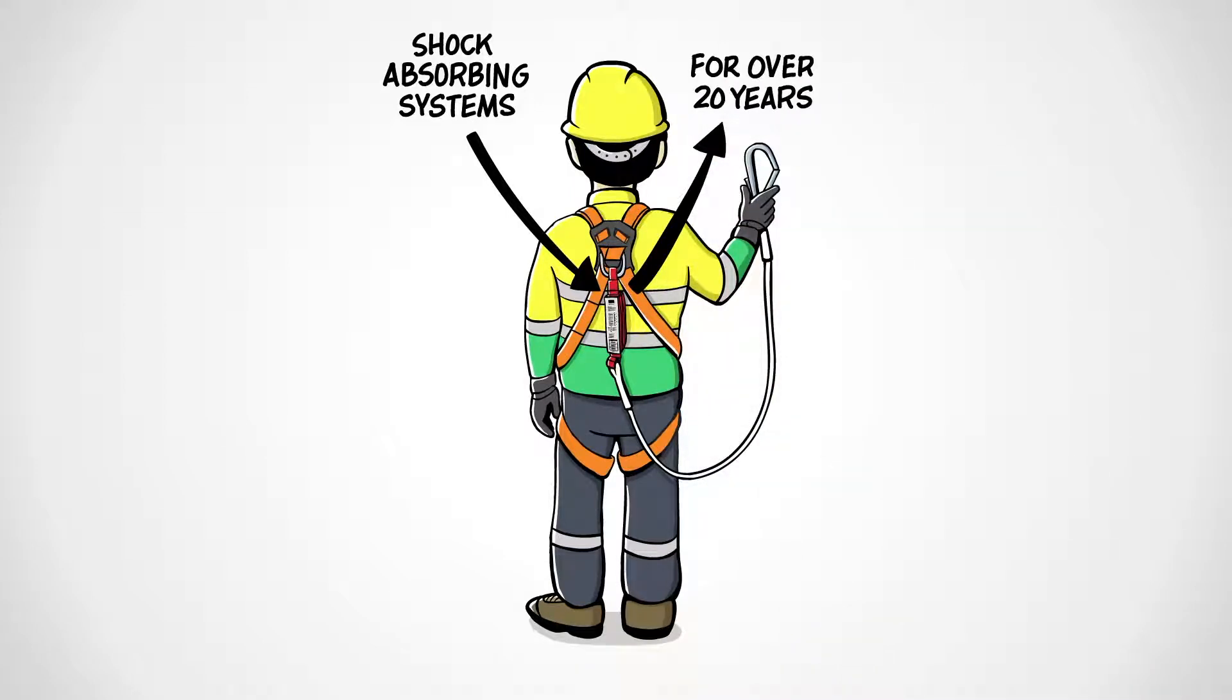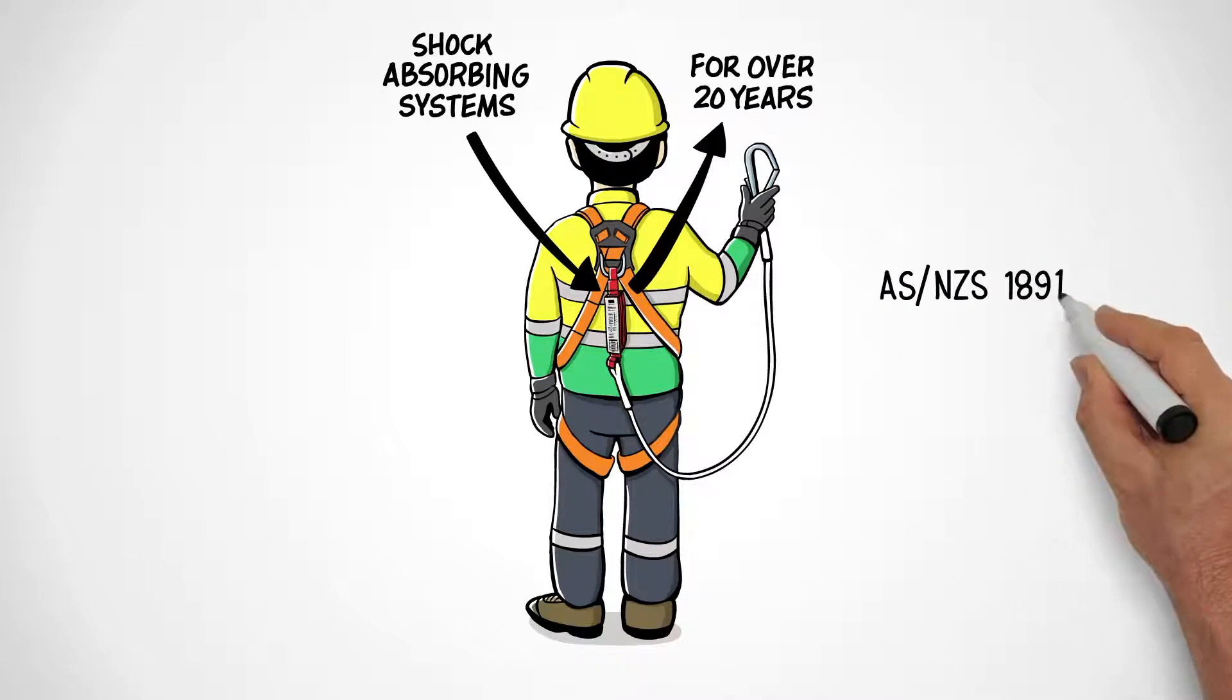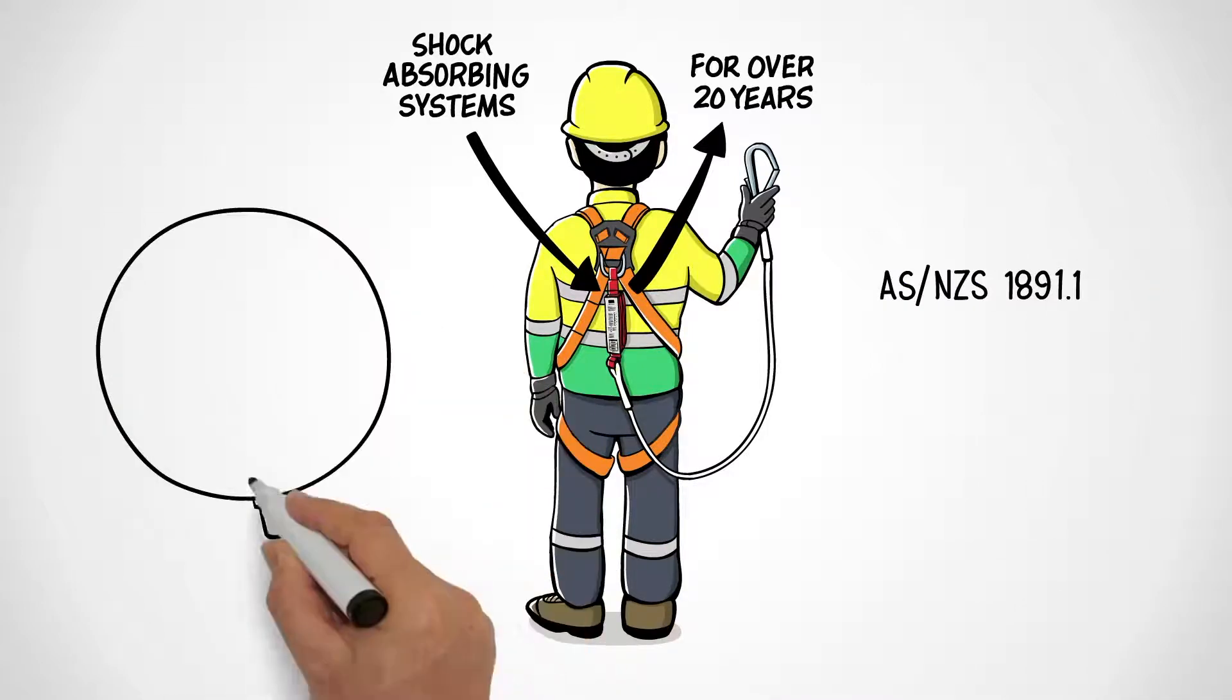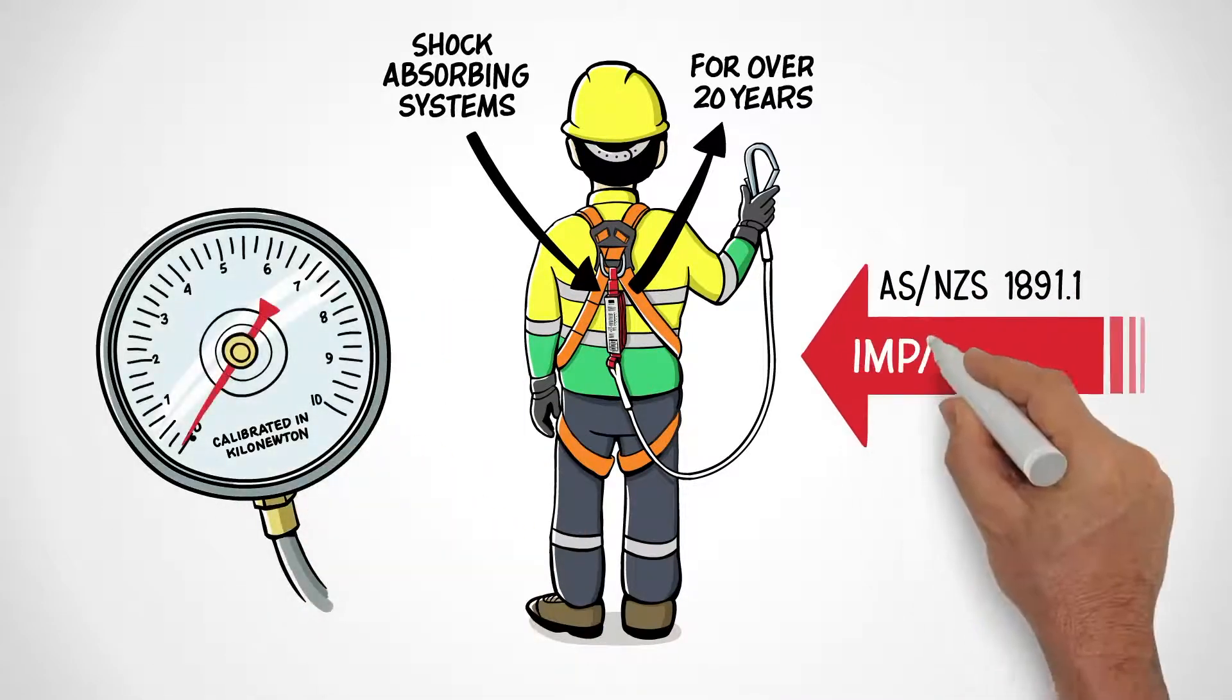Under Australia New Zealand design standard ASNZS 1891.1, we must not allow the body to receive an impact force exceeding 6 kN,